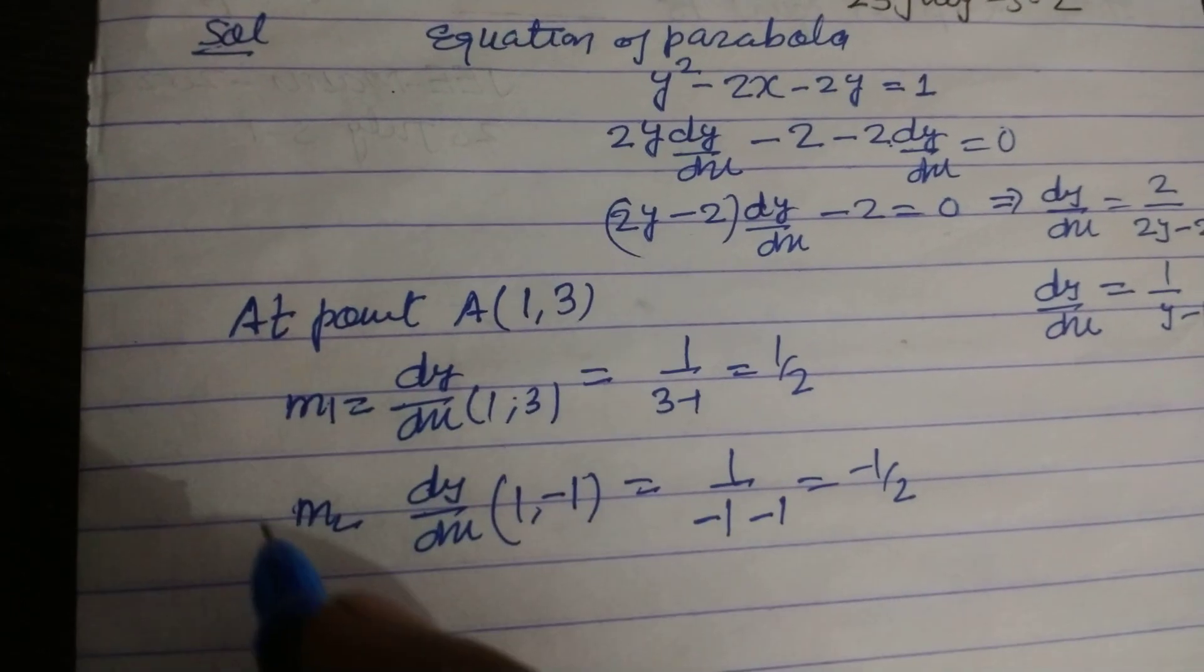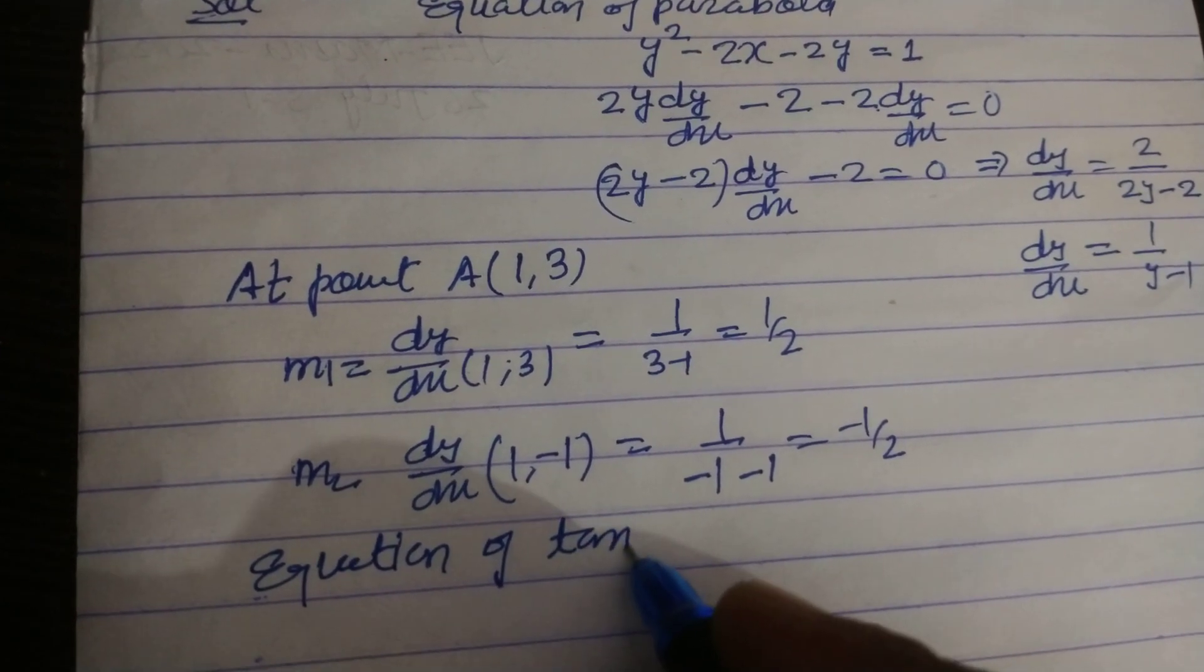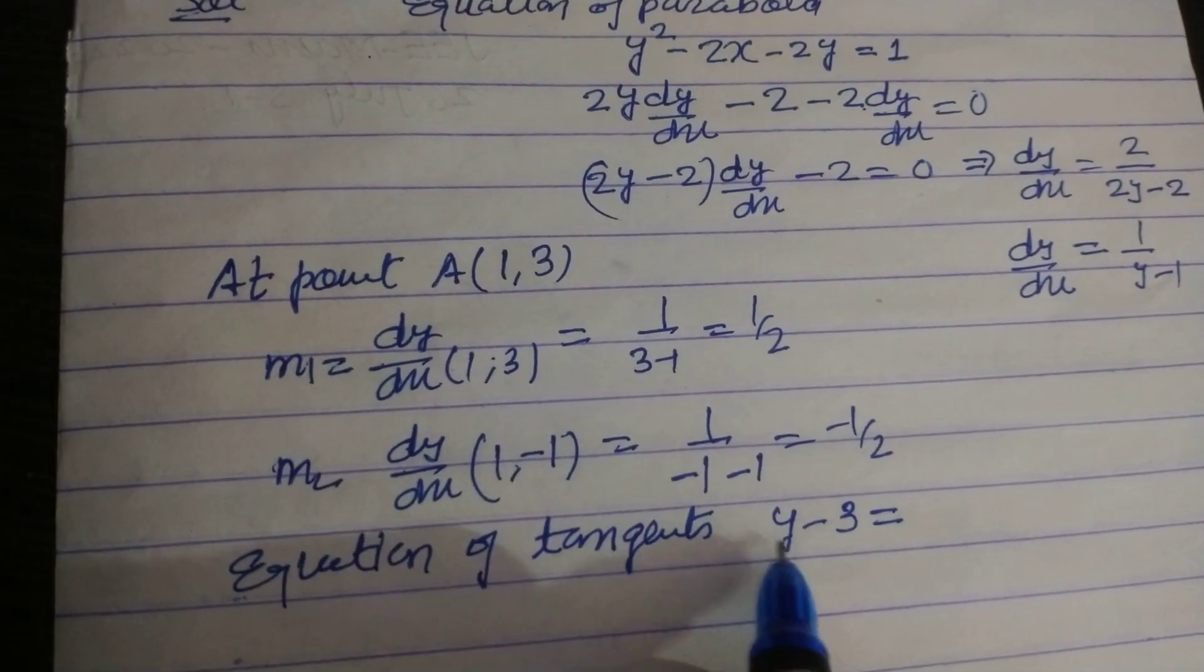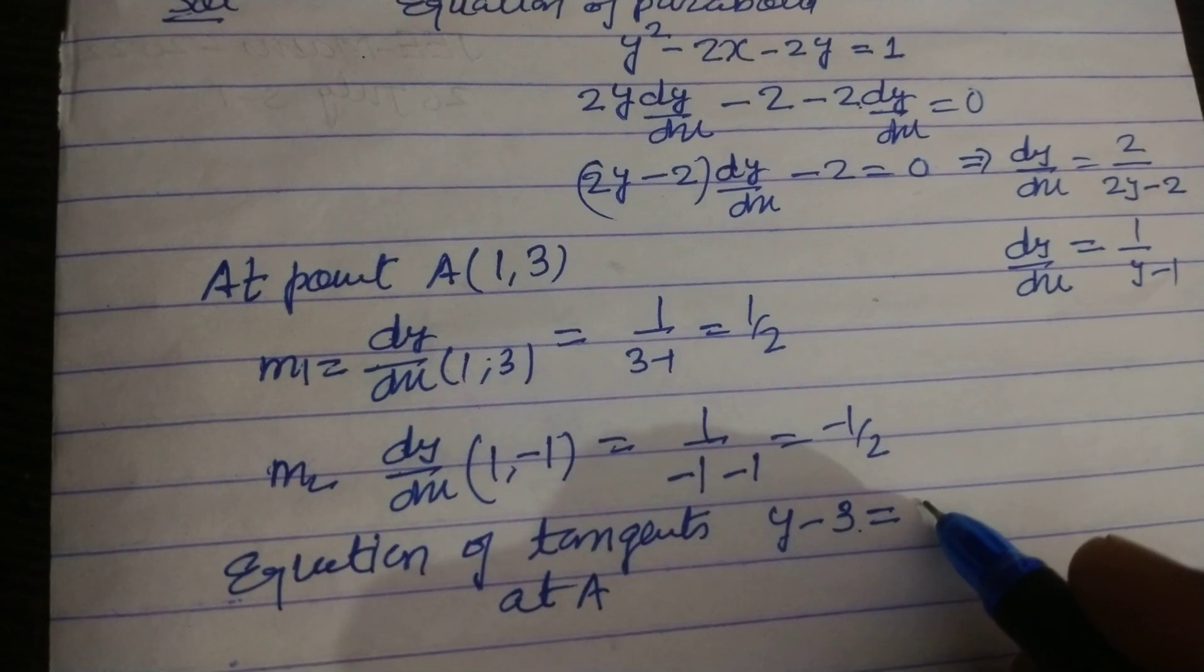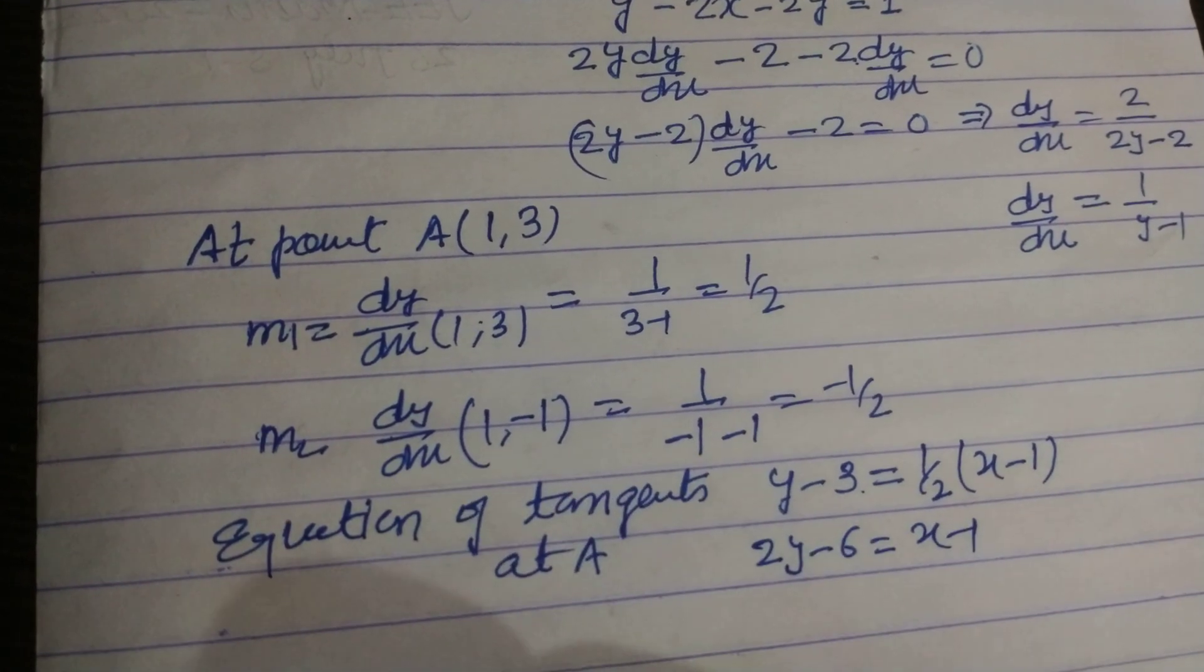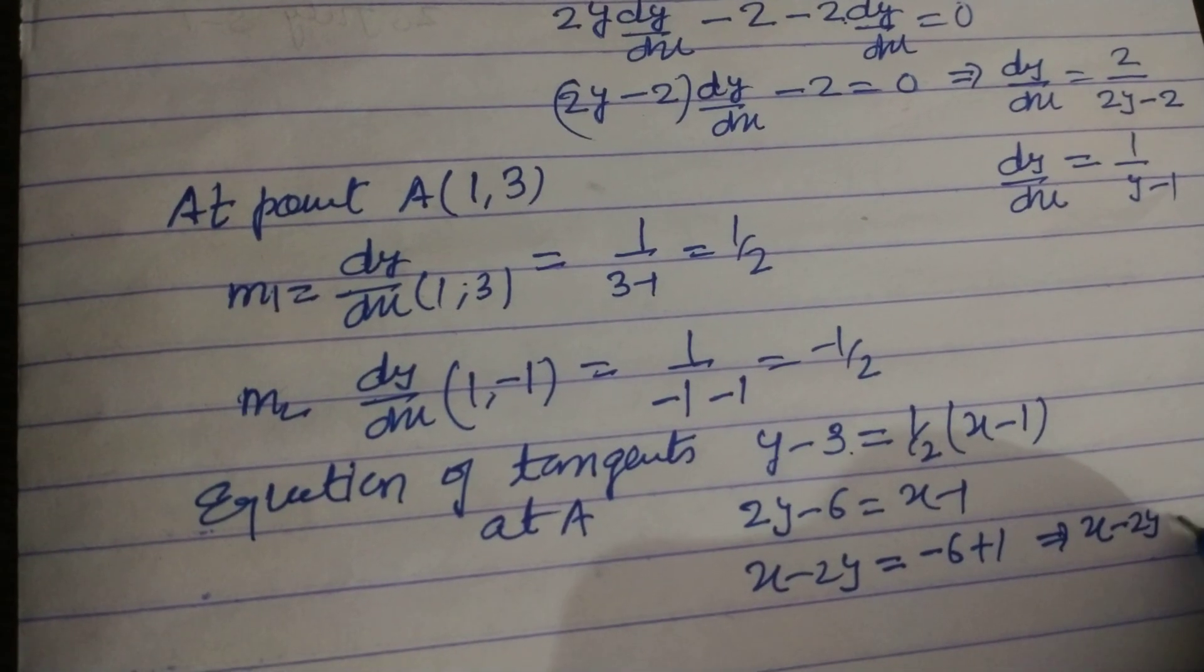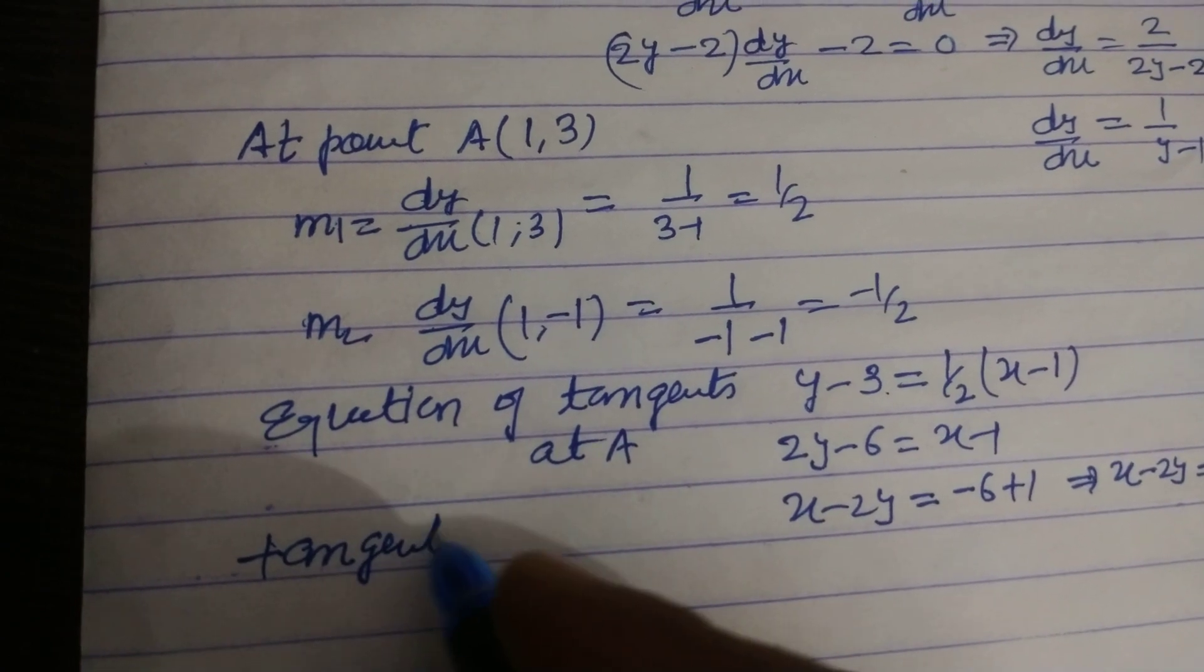Now equation of tangent, tangent at point A, y - y₁, y₁ is 3, m is 1/2, x - x₁. Solving this 2y - 6 = x - 1, it means x - 2y = -6 + 1, this will x - 2y = -5. So this is first tangent at point A.